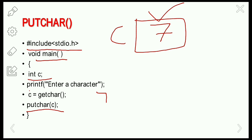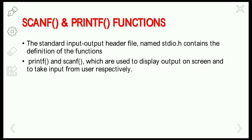getchar() and putchar() are unformatted functions — we are not using any format specifiers or type/width specification; we simply read a character from the keyboard and display the result on the screen. Next are the formatted input/output functions: scanf() and printf(). The stdio.h header file contains the definitions of printf() and scanf(), which are used to display output on the screen and to take input from the user respectively.